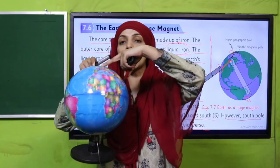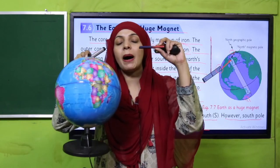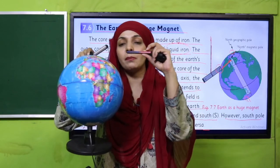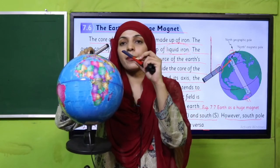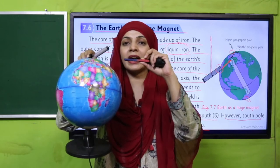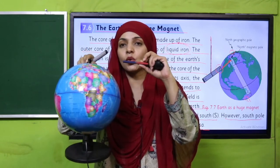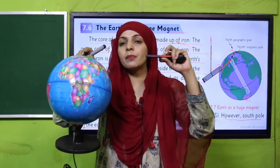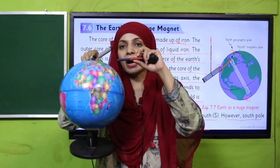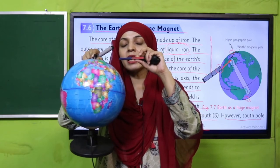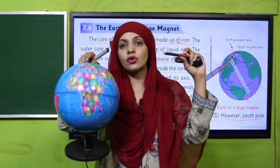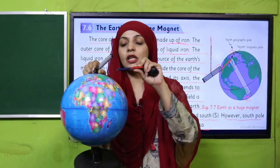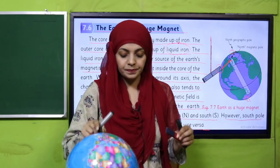If this is the north pole of the Earth, the bar magnet's south pole will align towards it — the bar magnet aligns its south towards it. Why? Because opposite poles attract each other and similar poles repel each other. That is why the south pole goes towards the north.